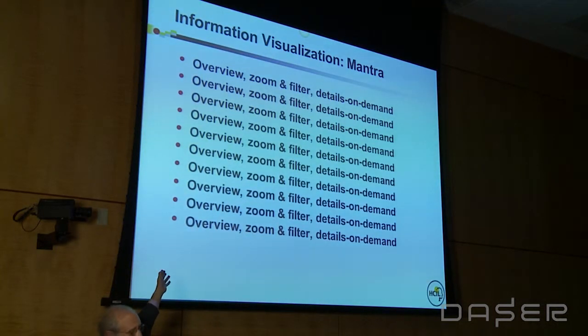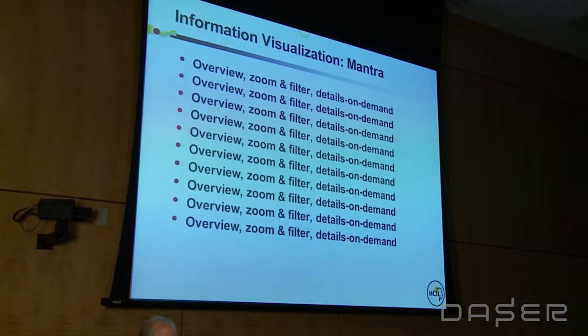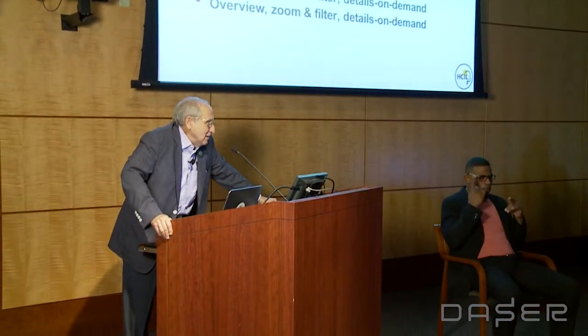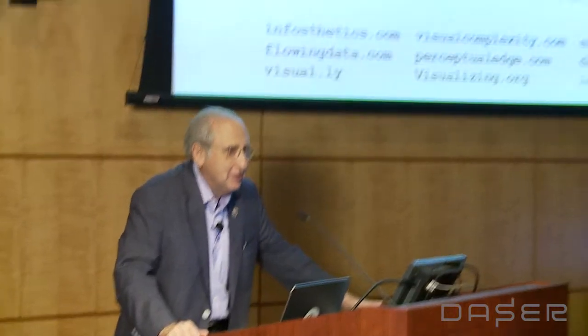In the paper I listed the mantra a dozen times playfully, suggesting each line represented a project where we struggled for weeks and months to come up with the design. There are almost 3,000 citations to this paper from a second-rate conference. People like it — they make jokes about it, extend it, and contradict it. But it asserts the centrality of human decision-making: the human sees the overview, zooms in on what they want, filters out what they don't want, and goes for details on demand.